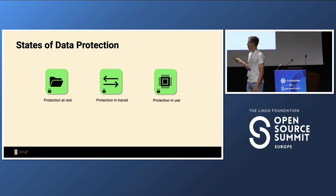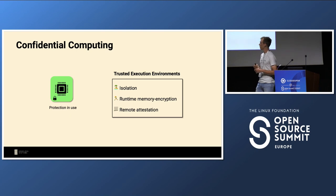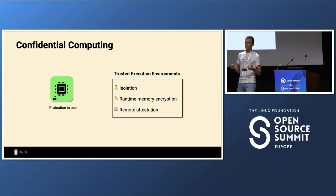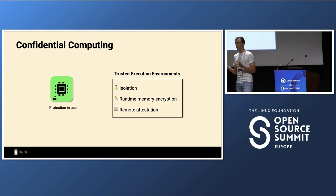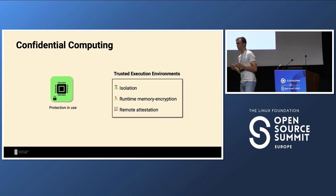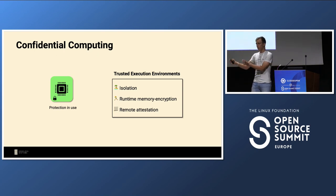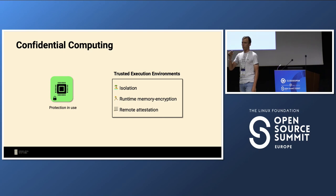There are other solutions like homomorphic encryption and other privacy-enhancing technologies, but the way confidential computing approaches this is via a hardware feature called trusted execution environments — a context from your processor that isolates your code and data from the rest of the system. This adds the property that data is encrypted while it's in main memory, and you have remote attestation: the ability to cryptographically prove the integrity, identity, and confidentiality of your TEE from a remote location, with the root of trust in your CPU.